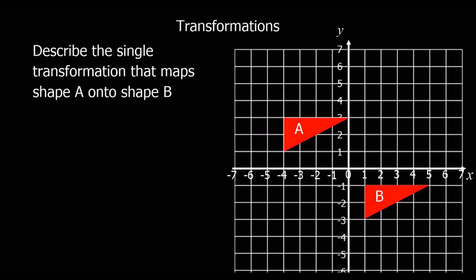Okay, describe the transformation that maps shape A onto shape B. So because the shape's just moved, it's called a translation. So it's a translation. That's the first bit of information. The second bit we need, we only need 2, is by which vector, by how far.